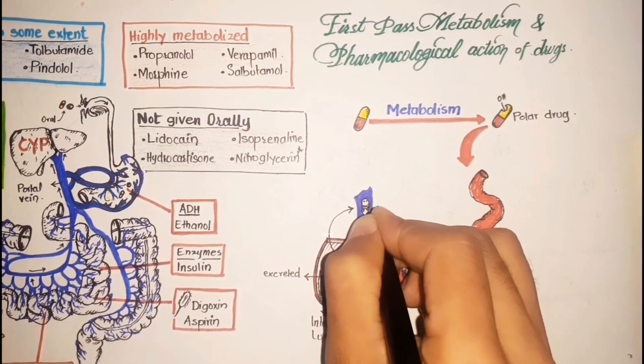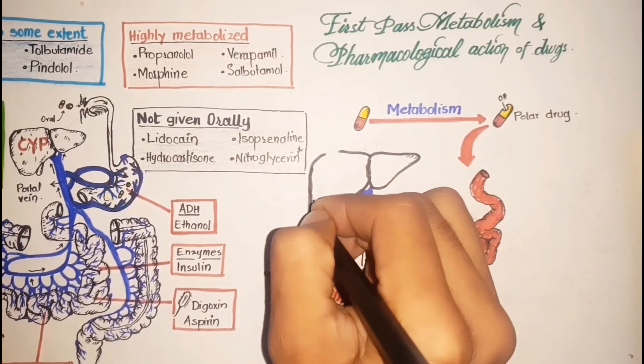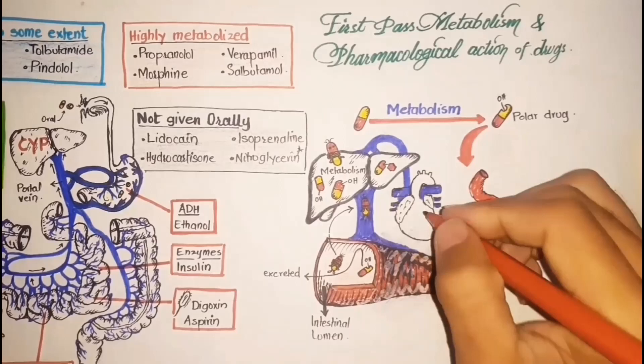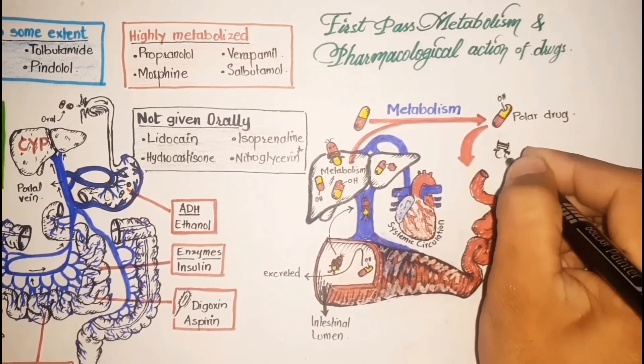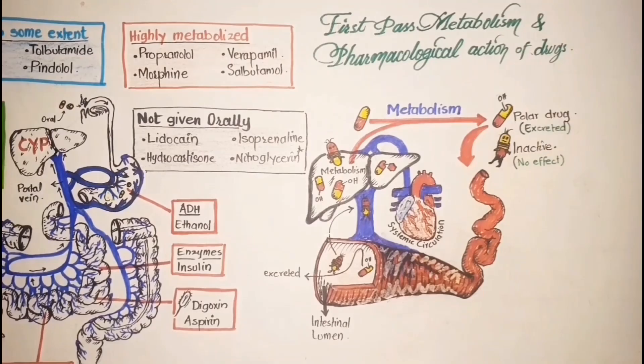Now, if a drug passes from here as such, then most of the drugs are subjected to metabolism in the liver, and thus the drug is inactivated before reaching the systemic circulation. And now, if this metabolized, meaning polar or inactivated drug reaches the systemic circulation, it won't have any pharmacological effect or is excreted from the body readily through the kidneys or bile.